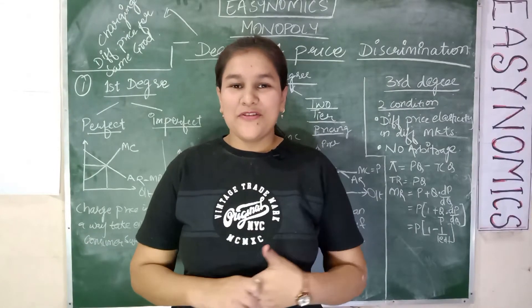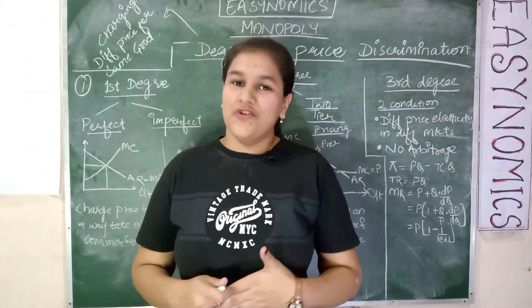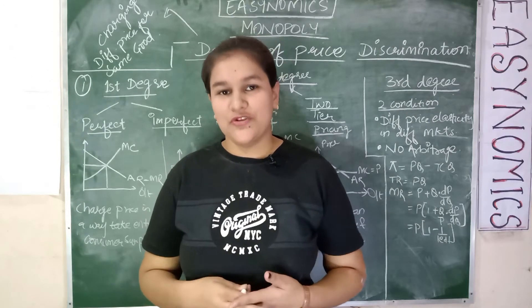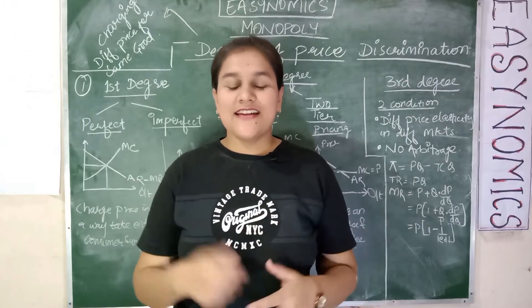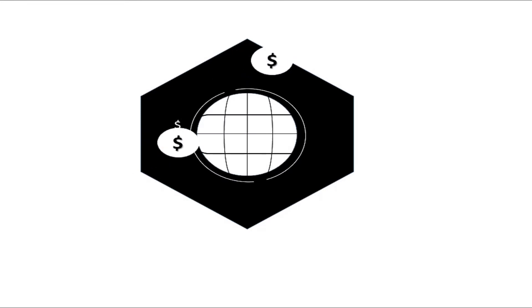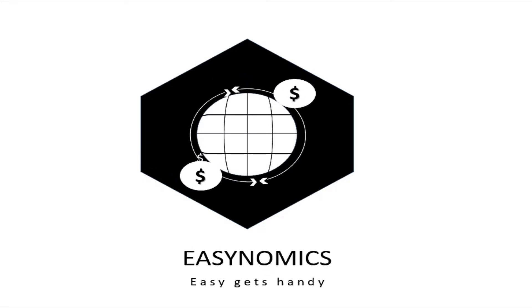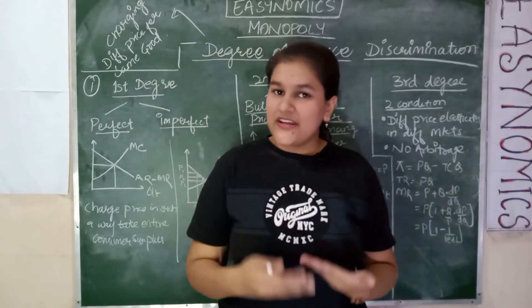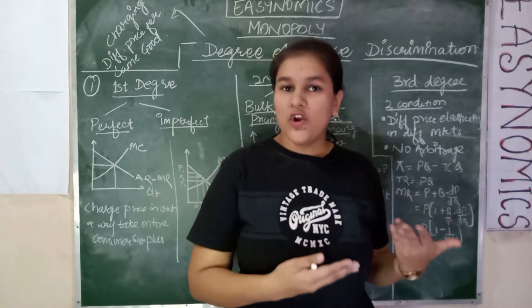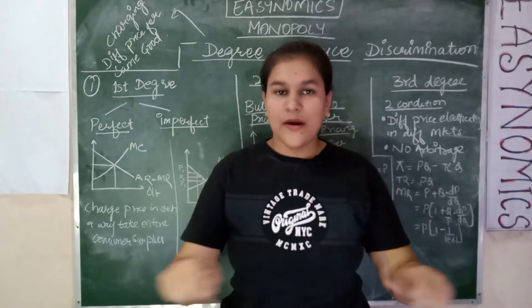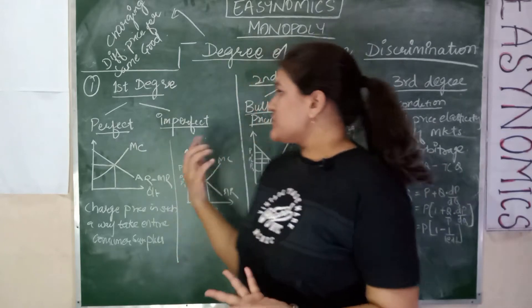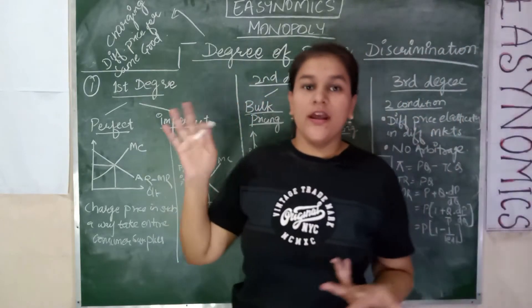Hello everyone, welcome again to my channel. This is Part 2 of the monopoly series, in which we will be discussing the degree of price discrimination done by the monopoly. We studied about monopoly, its equilibrium condition, and its three cases of supernormal, normal, and losses in my previous video — the link is in the description box. This is the second video in the series.